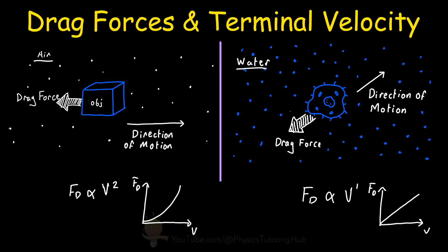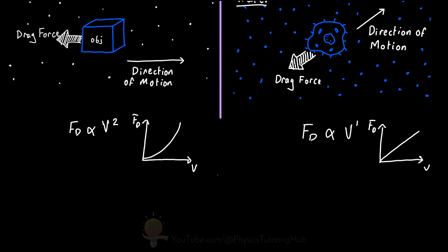For these two different scenarios, we need to use two different equations to describe the magnitude of the drag force. For large objects moving through air, the drag force is equal to one half multiplied by the drag coefficient, multiplied by the density of the medium it's moving through, multiplied by the surface area perpendicular to the direction of motion, multiplied by the object's velocity squared.